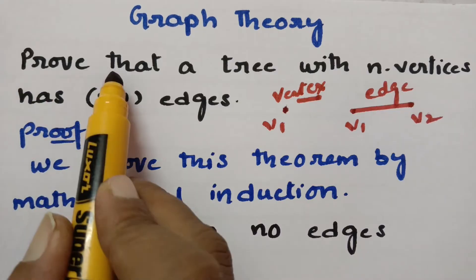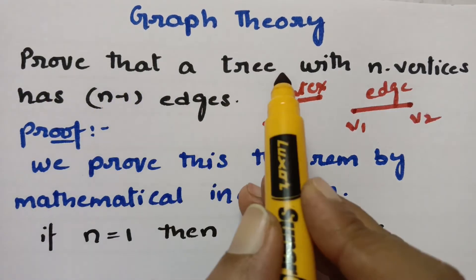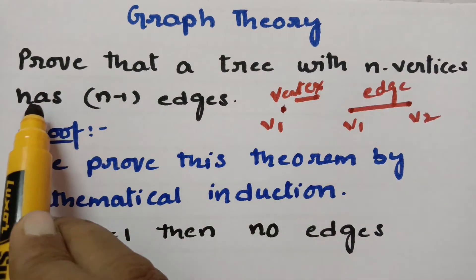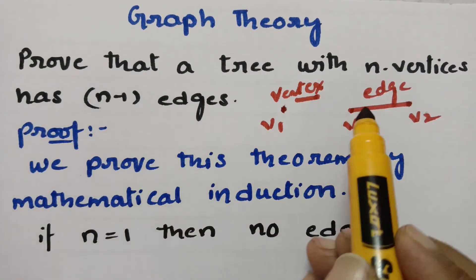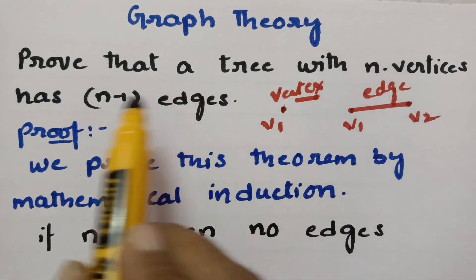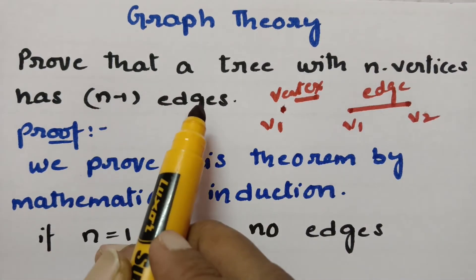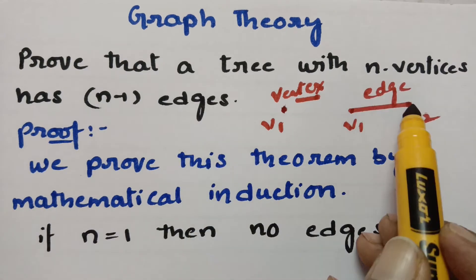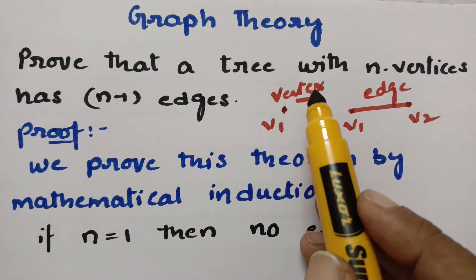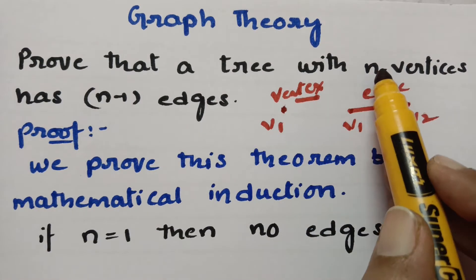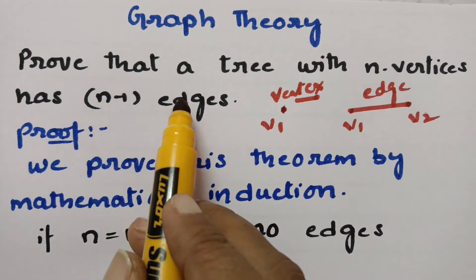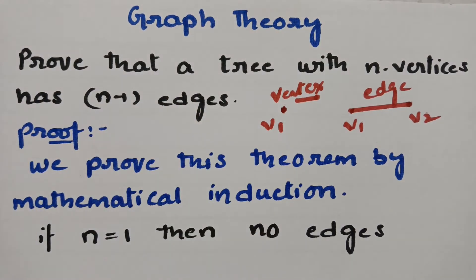So what do we have to prove? We have to prove that a tree with n vertices has n minus 1 edges. If you have three vertices, then you will have 3 minus 1, that is two edges. Lines are nothing but edges and dots are nothing but vertices. So if you have three dots, you will have two lines — two edges.